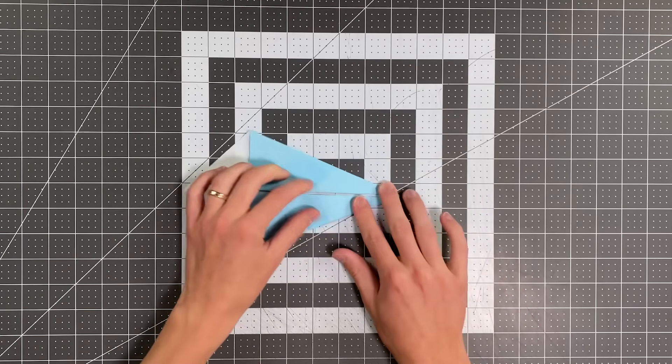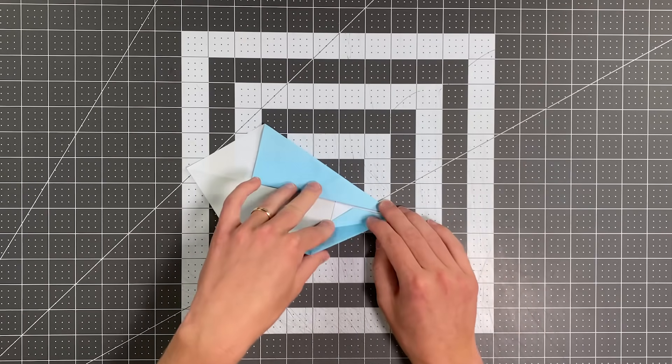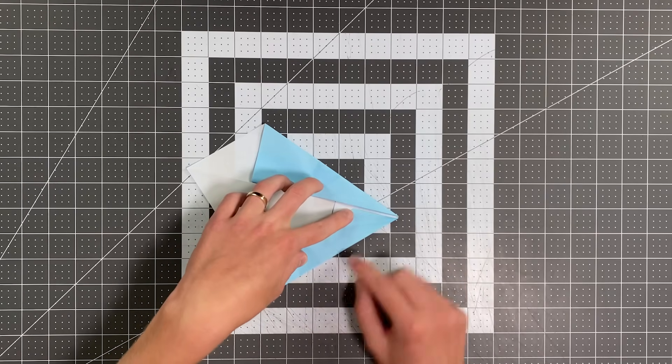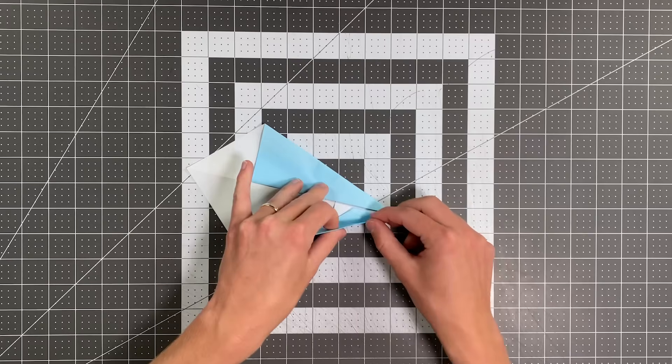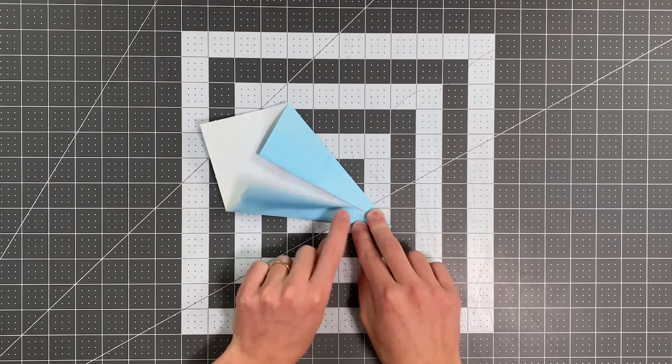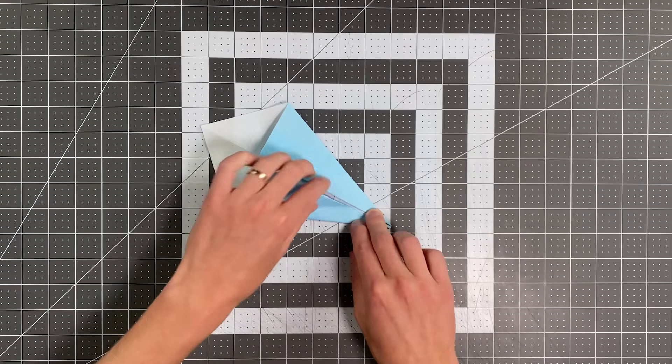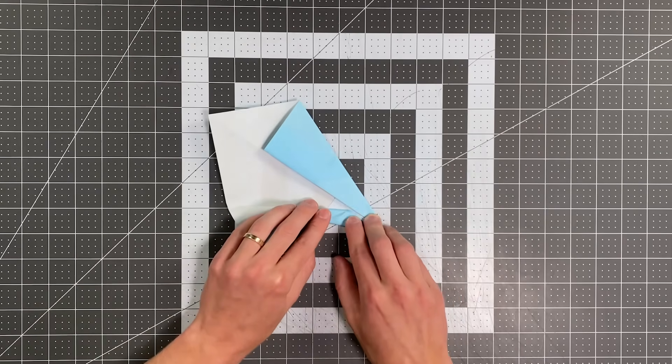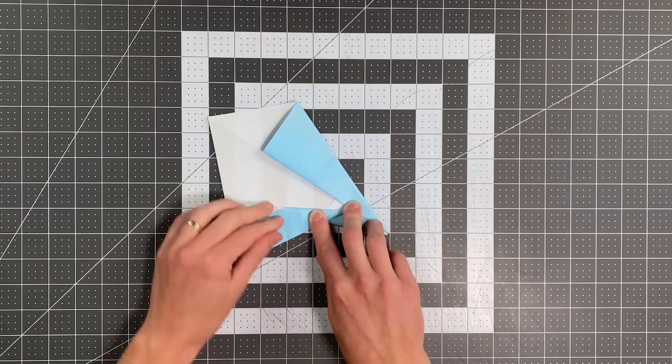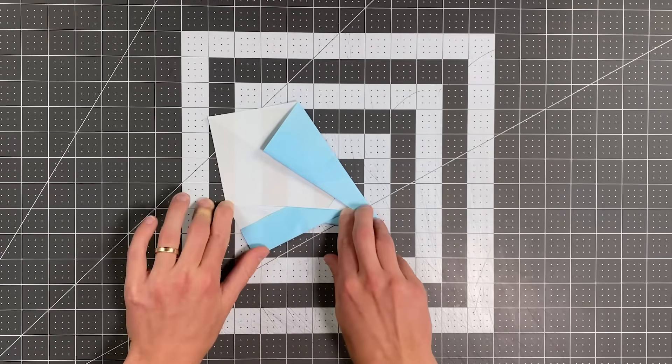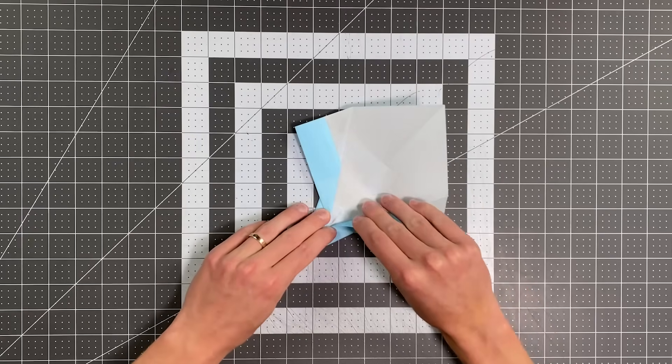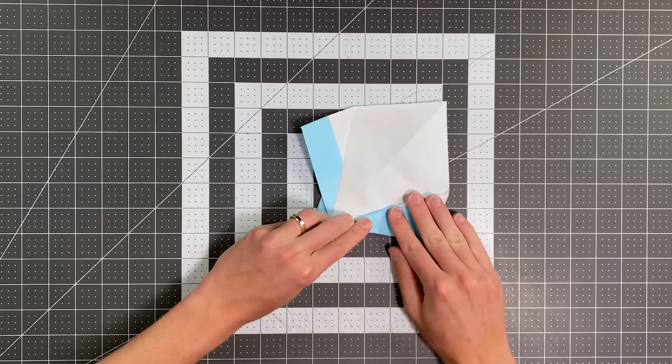So now I'm going to rotate it into this position and let you notice this corner right here where this layer is basically hitting the center crease. I want to pay attention to right where that is. And I'm going to start a crease that starts right at the same point as that. And my crease is going to go down to this corner right here. And once I do one side, I'm going to fold the other side exactly the same way.